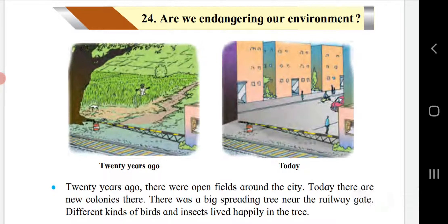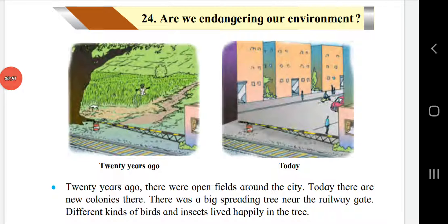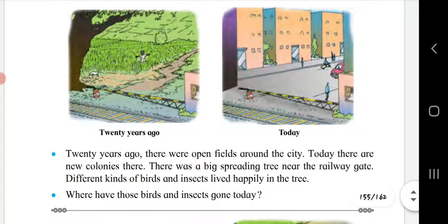Here two pictures are given — 20 years ago and today. You can see the difference in these two places. In the first picture, we were attached to our environment, and in another picture, we have cleared all the forest areas and built houses there. The settlement development had taken place here. 20 years ago there were open fields around the city; today there are new colonies there.